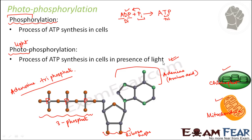From our knowledge from the previous slides, we saw that light can be absorbed using the photosystem — that is, using different pigment molecules and the reaction center. Now how that light will be converted into ATP, how that synthesis will happen, we will understand by understanding the process of photophosphorylation.